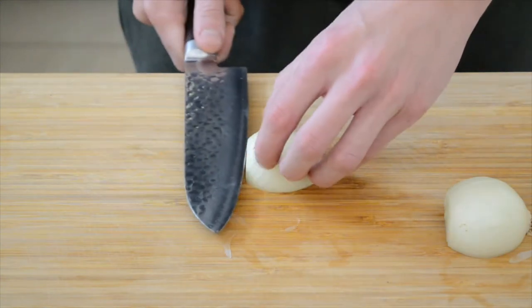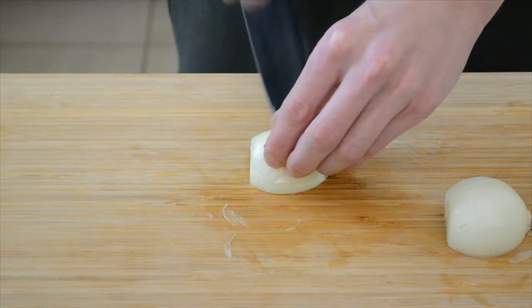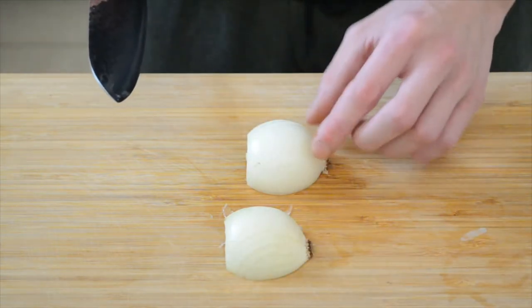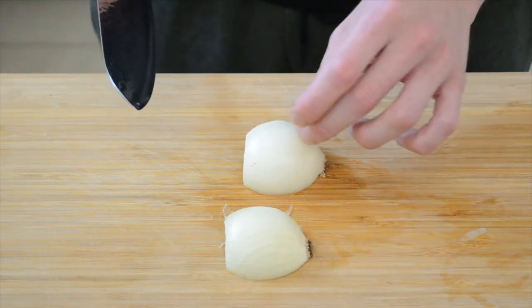Once that's done, cut the centre straight to the root. Not all the way though, still leave a little bit of gap between the root and the onion.